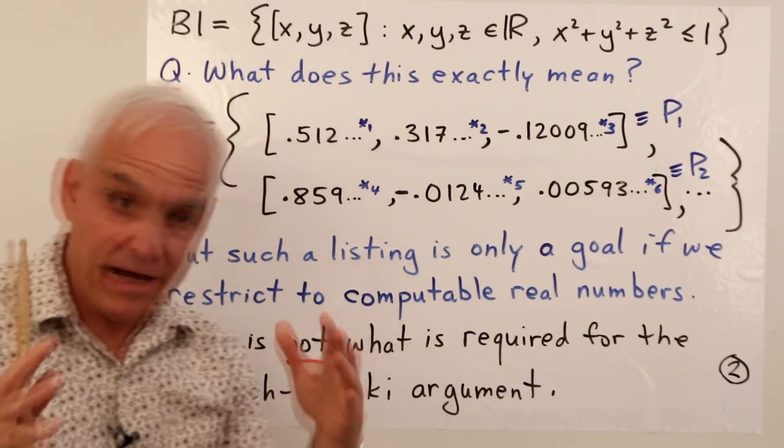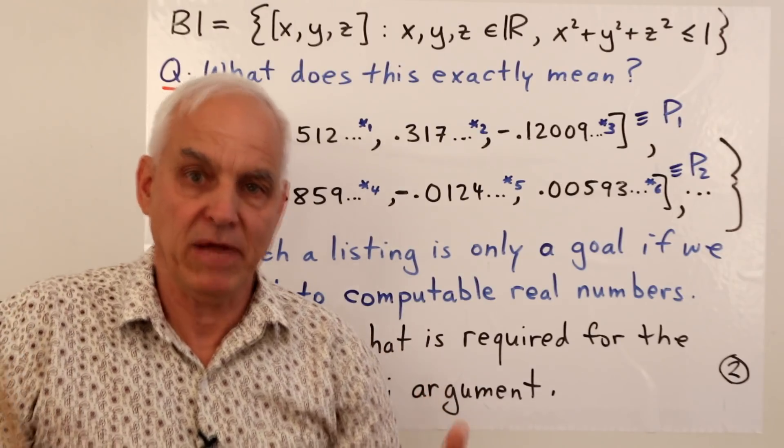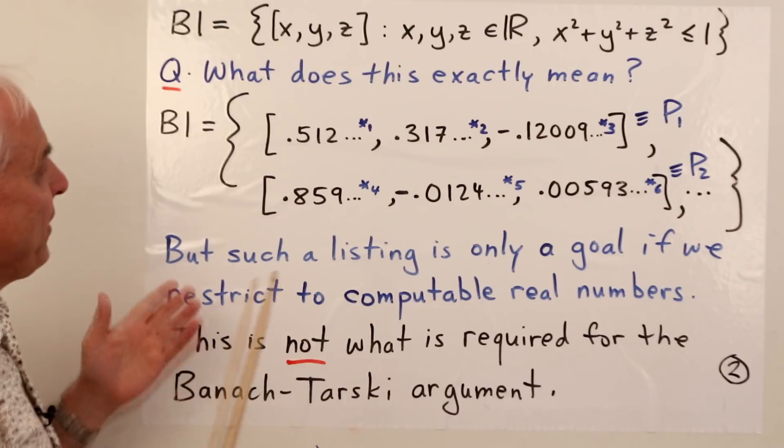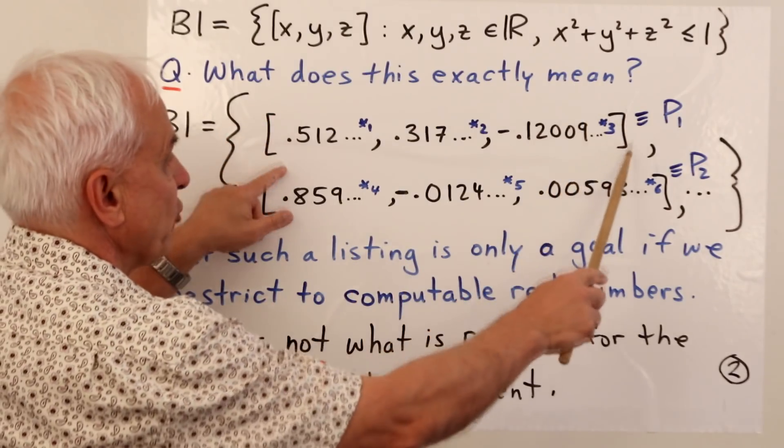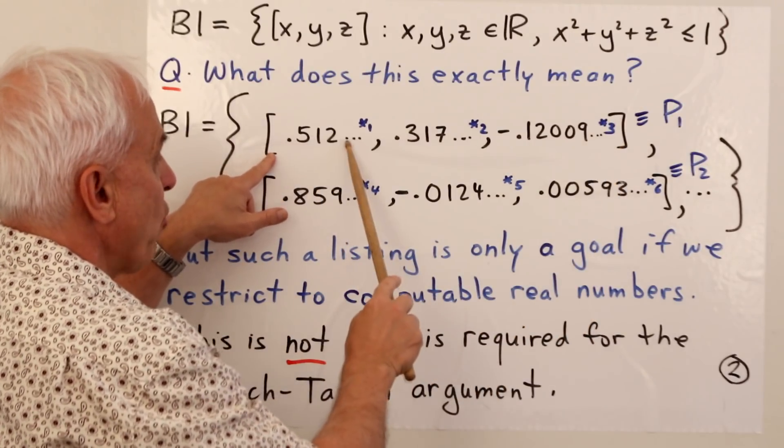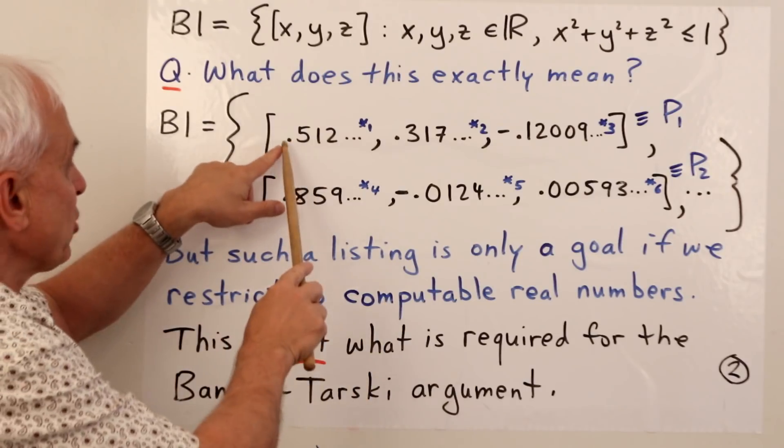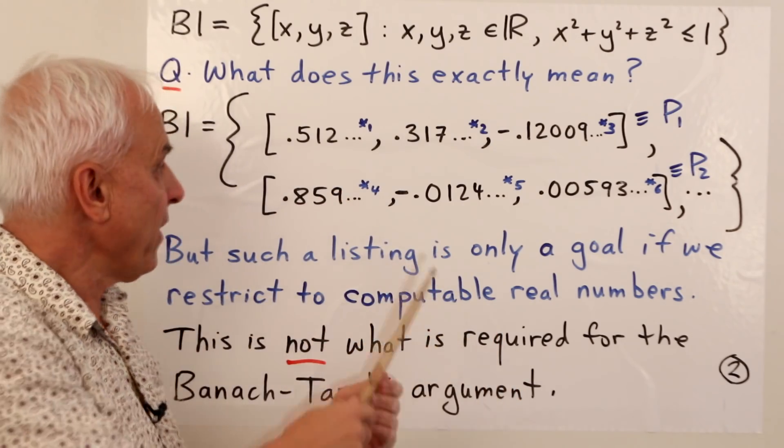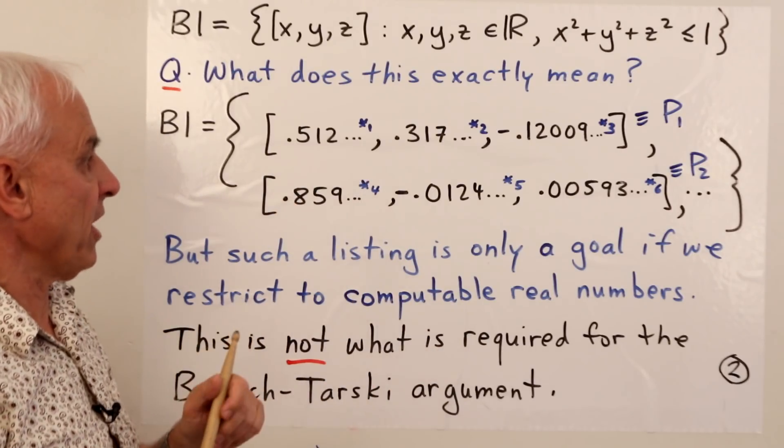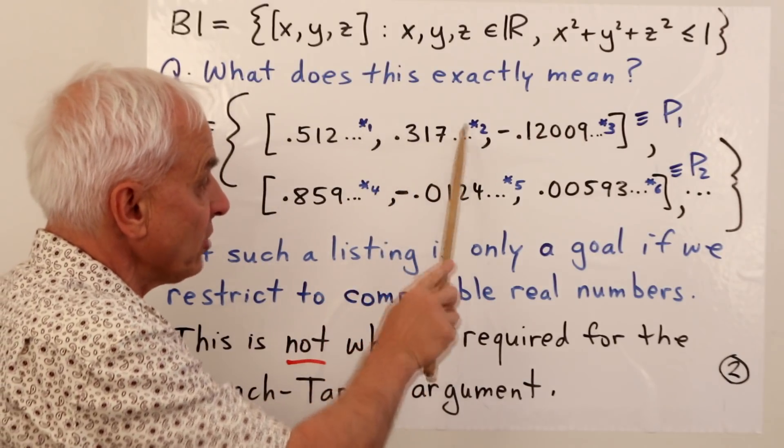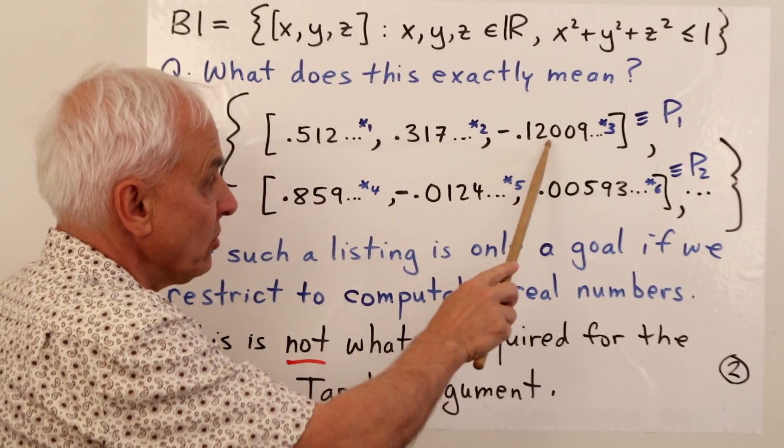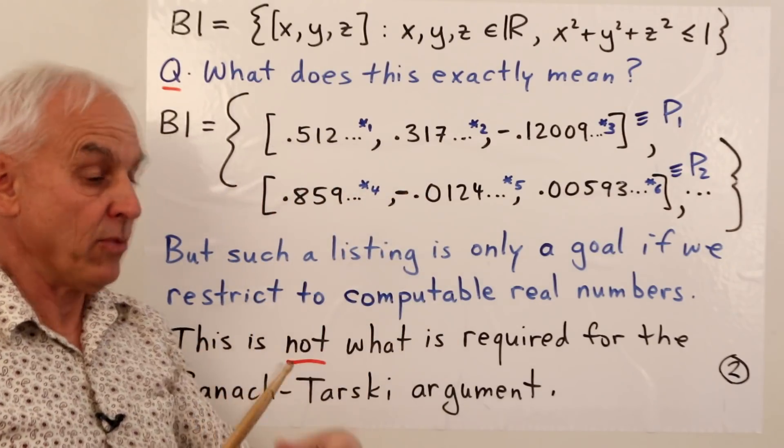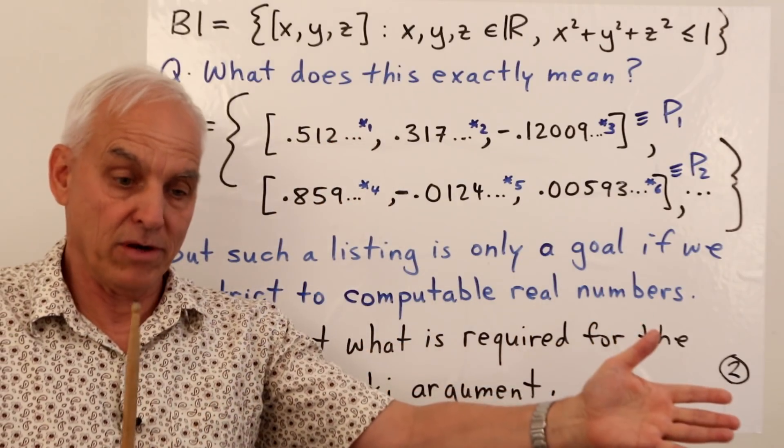Now when we see something like this, or when you see it, what are you supposed to think? What does this actually mean? Well let me try to flesh out a little bit about the nature of this might be. Okay, so it's a set, so first of all there should be some braces because that's how we usually denote sets. And the elements of the sets are these triples of numbers. So here's the first triple, there's square brackets and there's an x coordinate, a y coordinate, and a z coordinate. So this first x coordinate is 0.512 dot dot dot, so there's some decimal, typically an infinite decimal that starts 512 and then it goes on in some fashion and it's not clear what that fashion is. And then the next one, the y coordinate, is 0.317 dot dot dot, and then the z coordinate is minus 0.12009 dot dot dot.